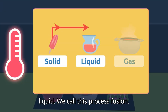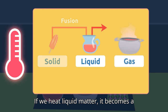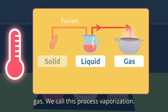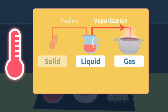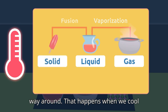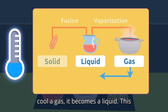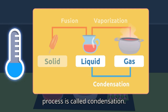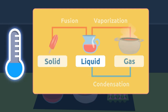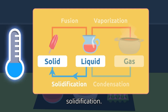Let's recap: if we heat solid matter it becomes a liquid — we call this process fusion. If we heat liquid matter it becomes a gas — we call this process vaporization. These two processes can occur the other way around when we cool matter. If we cool a gas it becomes a liquid — this is condensation. If we freeze liquid matter it becomes a solid — this is solidification.